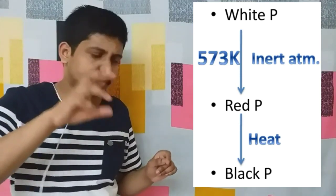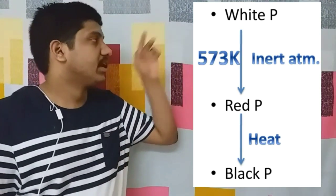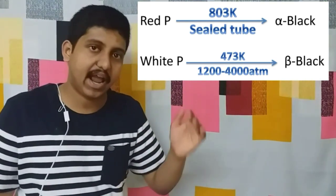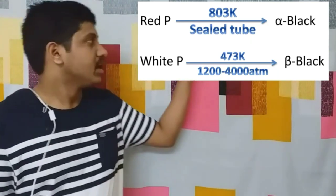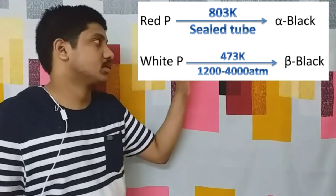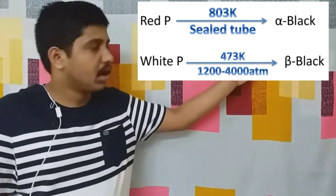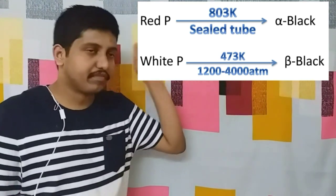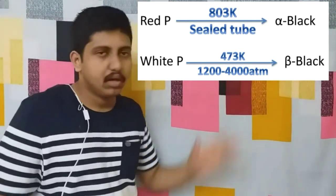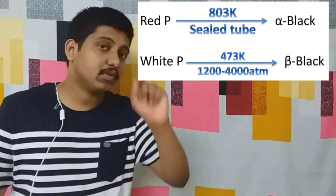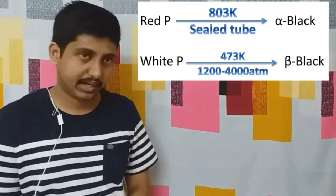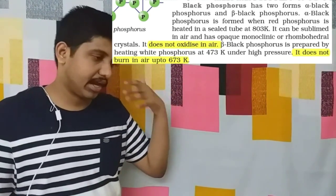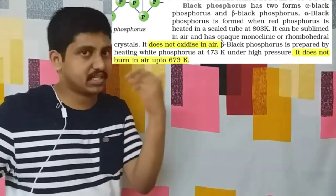Regarding black phosphorus: there are two types — alpha and beta. Alpha is usually produced from red phosphorus, and beta from white phosphorus. You can remember it as Alpha-Red. Alpha black phosphorus: red phosphorus at 803 Kelvin in a sealed tube produces alpha black phosphorus. Beta black phosphorus: white phosphorus reacts at 473 Kelvin. Alpha black does not oxidize in air at all, but beta black does not oxidize up to 673 Kelvin.